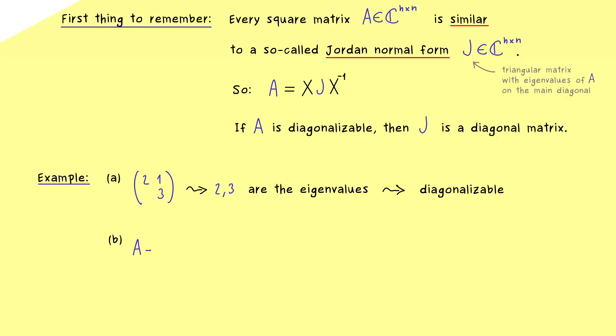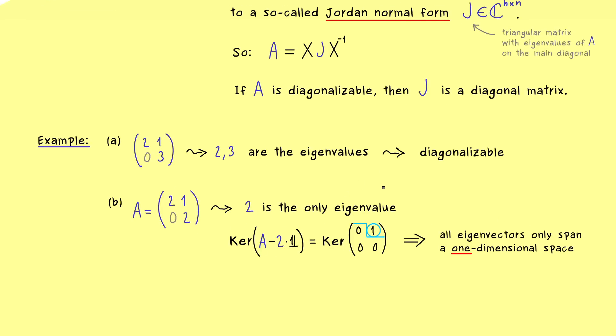However, the picture completely changes if A only has one eigenvalue. So let's consider the matrix with entries 2, 1, 0, 2. Hence here, 2 is the only eigenvalue of A. However, A could still be diagonalizable if the eigenspace is 2-dimensional. And there you should definitely know that the eigenspace is given by a kernel. Namely, it's the kernel of A minus 2 times the identity matrix, which is quite simple: we have the kernel of the matrix 0, 1, 0, 0. And this matrix is already in the row echelon form with just one pivot. So only one free variable, which implies that the eigenspace is one-dimensional. Hence we cannot span the whole two-dimensional vector space with eigenvectors, and therefore the matrix A is not diagonalizable.